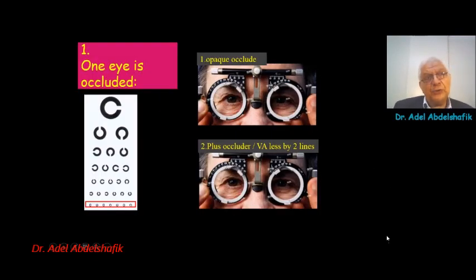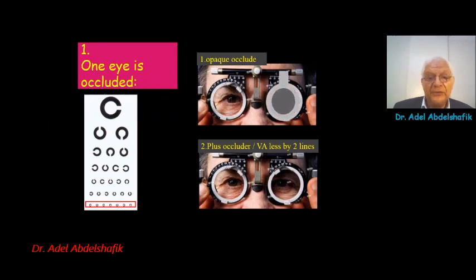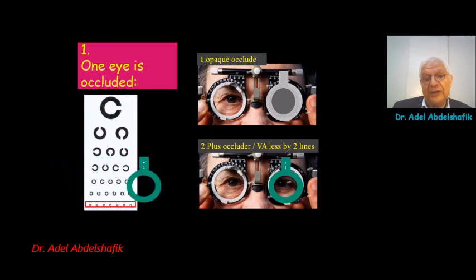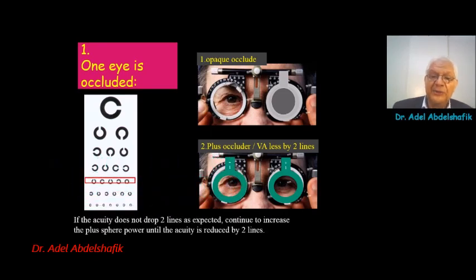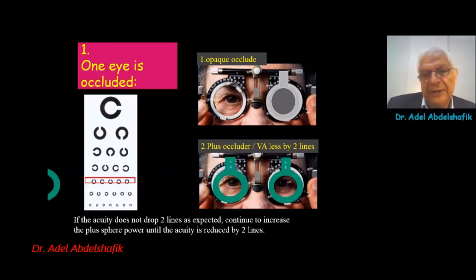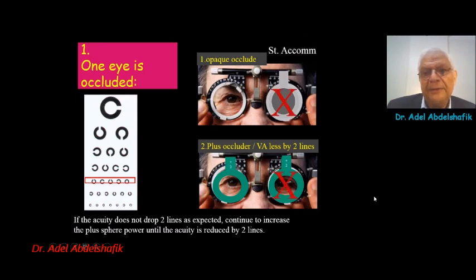We examine one eye at a time, so we occlude the other eye. Occlusion can be done by one of two things: either by an opaque occluder, or better, by using a plus occluder — placing plus lenses in front of the eye of increasing power until the visual acuity drops by two lines. If it does not drop, we can add more plus lenses. The problem with the opaque occluder is that it can be a stimulus for accommodation, so it is better to use the plus occluder.